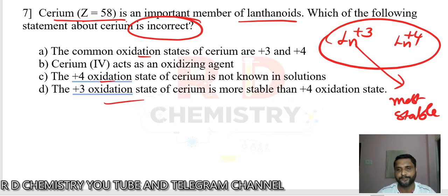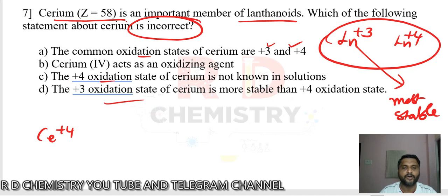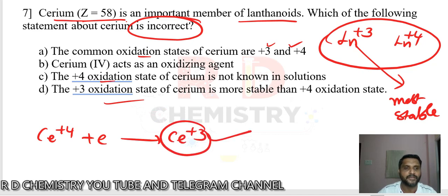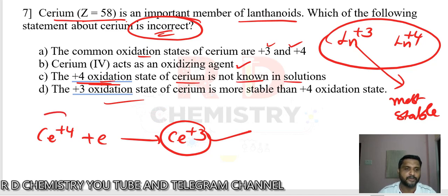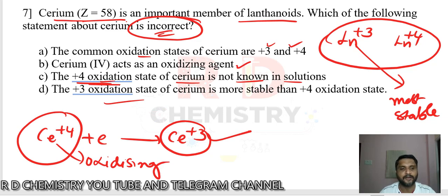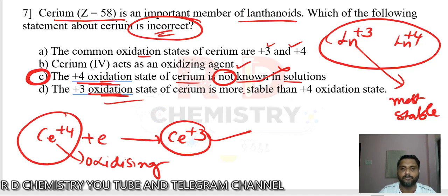Option A — cerium shows both +3 and +4 oxidation states — is a correct statement. Cerium +4 is an oxidizing agent: it oxidizes other substances and undergoes reduction to give cerium +3 (the most stable state). The statement that the +4 oxidation state of cerium is not shown in solution is incorrect — cerium(IV) does exist in solution as an oxidizing agent. Plus 3 is more stable than +4. Therefore the answer is option C.